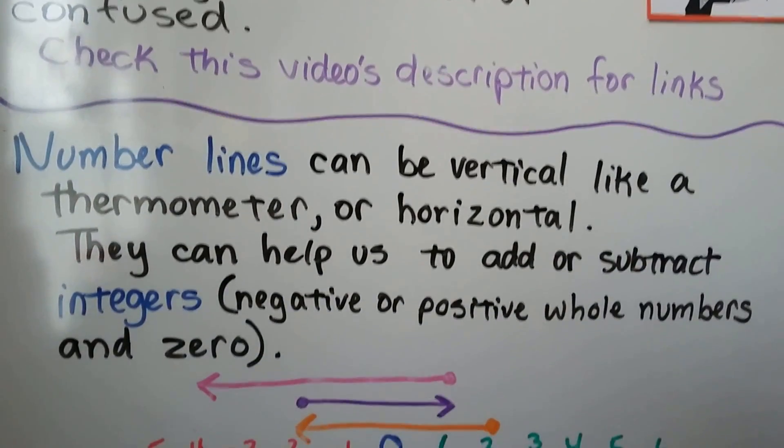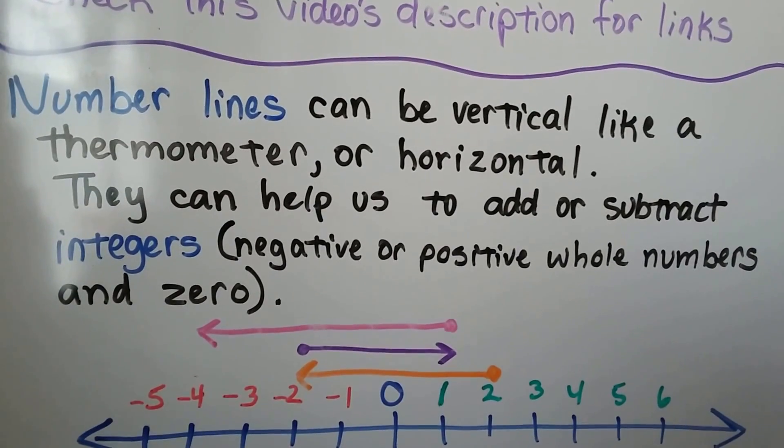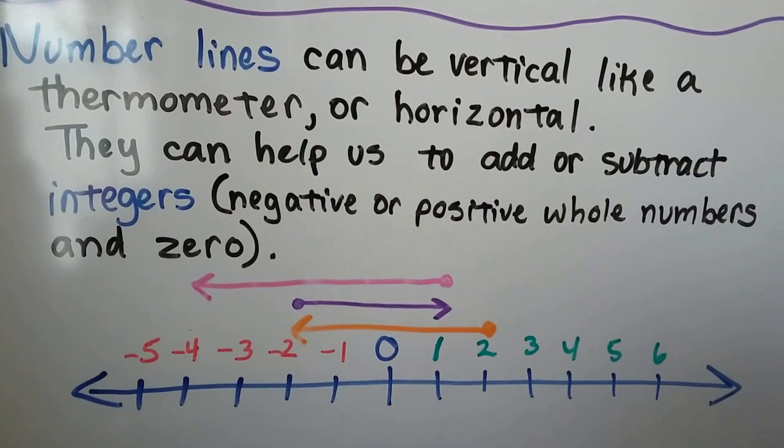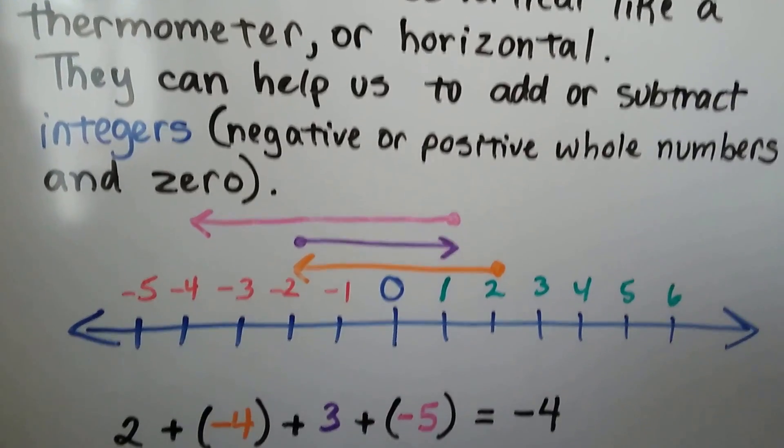Number lines can be vertical like a thermometer or horizontal. They can help us to add or subtract integers, you know negative or positive whole numbers and zero.